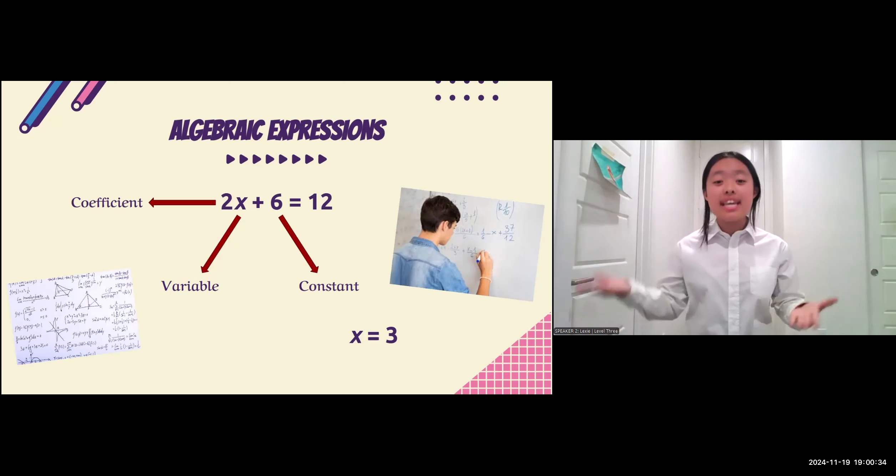Then, you would add 6 to the constant, which also coincidentally happens to be 6 in this equation. 6 plus 6 is 12, which gives you the answer to this equation.